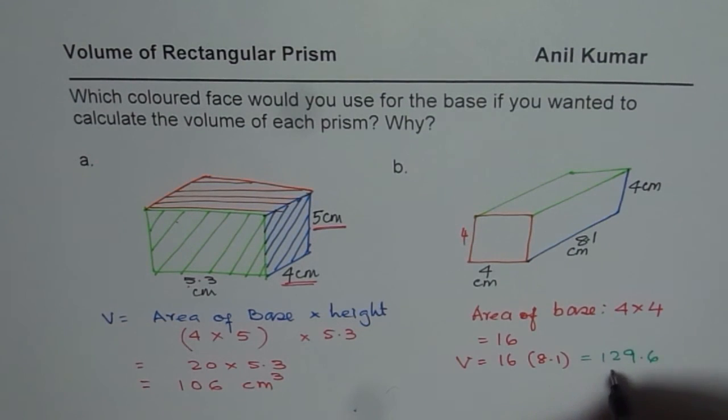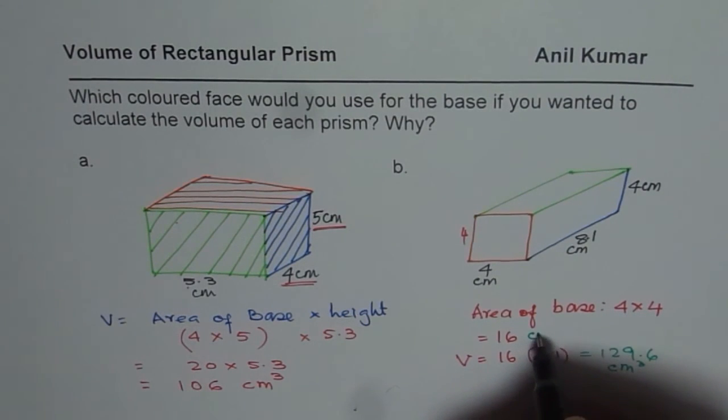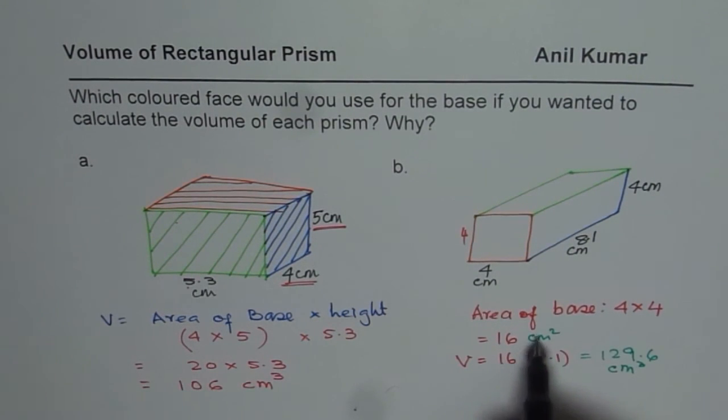So let me write down the units also. Always write down units. Volume is always in cube. Area will be in centimeter square. So 16 centimeter square times 8.1 centimeters will give you a volume of 129.6 centimeter cube. Thank you.